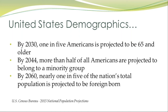When you look at the U.S. Census Bureau: by 2030, one in five of us will be 65 or older. By 2044, no single subgroup of Americans will be in the majority. And by 2060, 20% of us will have been born in a foreign country.